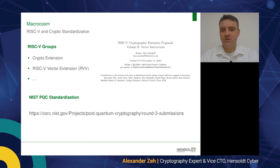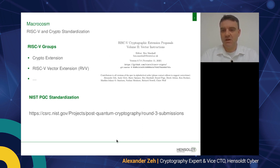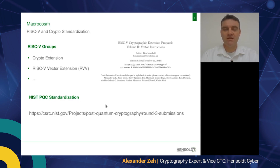The macrocosm for RISC-V and crypto relevant for this talk involves two main groups working on RISC-V: the crypto extension group, tracked by Ben Marshall, and the RISC-V vector extension group, which was at version 0.9 when we worked on it. Furthermore, there is an ongoing post-quantum cryptography standardization driven by NIST, currently at round three. We picked one of the final candidates and show optimizations using the RISC-V vector extension.